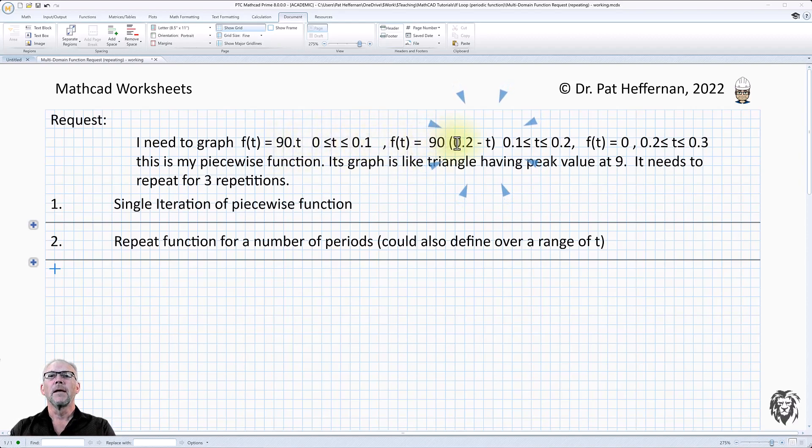And then in the second domain, 0.1 to 0.2, it has a different function where it's decreasing linearly back to 0. And finally, in that last third of the repetition between 0.2 and 0.3, it's equal to 0.